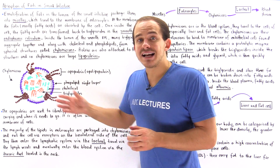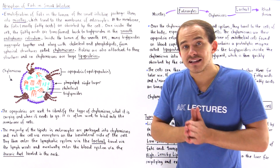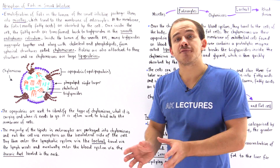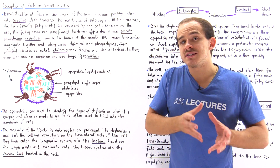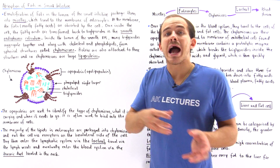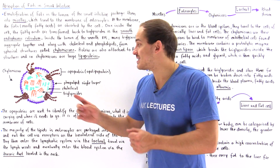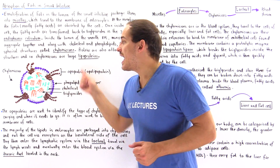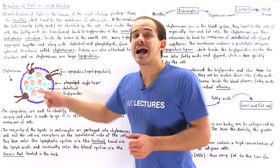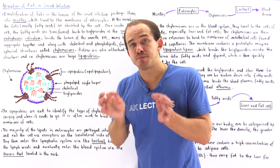The fatty acids, the fats, travel from the small intestine to our blood system via our chylomicrons.